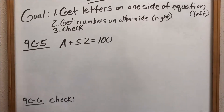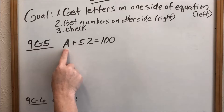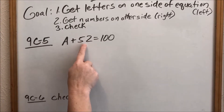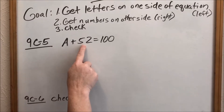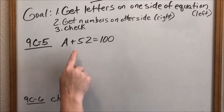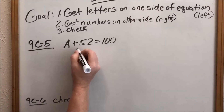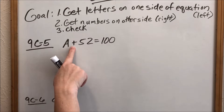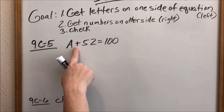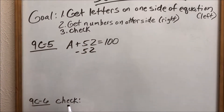So if I want letters on one side, I want to leave this letter here on the left side of the equal sign, and I want numbers on the right-hand side. That means I don't want this number here. It is a positive 52, so to get rid of it I have to subtract it away — I have to do the opposite of what's being done. Right now it's being added; the opposite of adding is subtracting. So I subtract 52 to get it to go away.